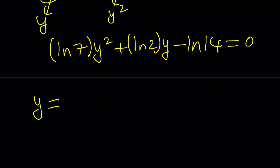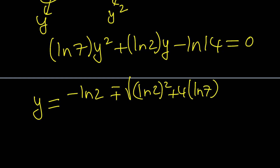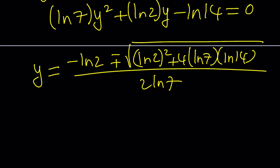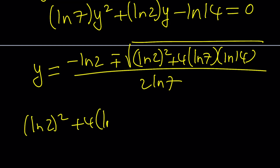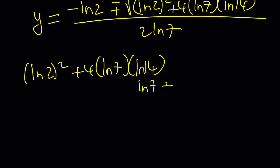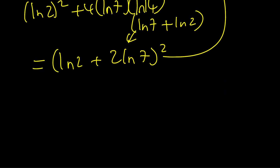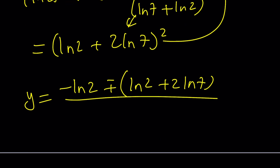Using the quadratic formula, y equals negative ln 2 plus or minus the square root of (ln 2)² plus 4 · ln 7 · ln 14, all divided by 2 ln 7. Working out the discriminant: (ln 2)² plus 4 · ln 7 · ln 14 — writing ln 14 as ln 7 plus ln 2 and distributing — yields a perfect square: (ln 2 + 2 ln 7)². Taking the square root gives ln 2 + 2 ln 7.